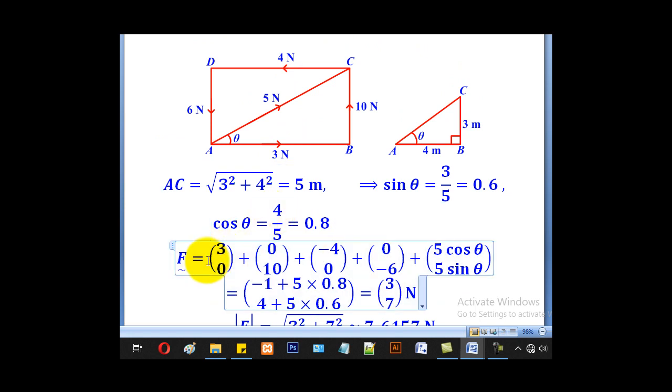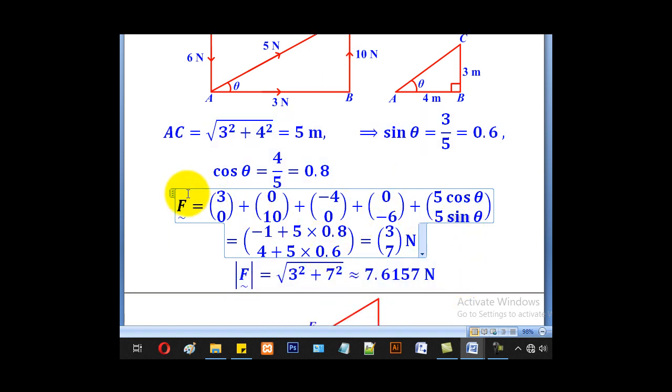3 is entirely horizontal, so it will be (3, 0). 10 is entirely vertical, so (0, 10). 4 is entirely horizontal but to the left, so (-4, 0). 6 is entirely vertical but downwards, so (0, -6). And 5, horizontally, will be 5 cos θ, and vertically will be 5 sin θ.